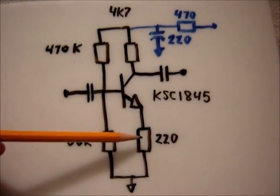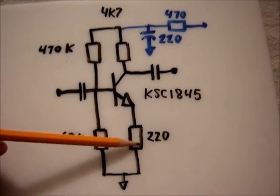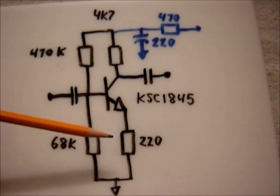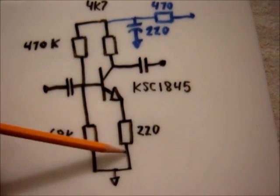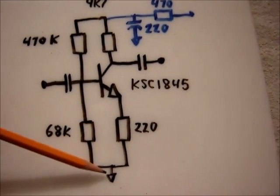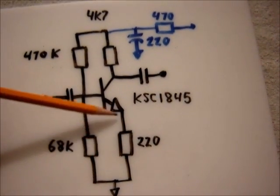Now we get to the emitter resistor. This has an interesting job in this circuit. If you remember, current through a resistor creates a voltage across that resistor. So think of this circuit as a totem pole.